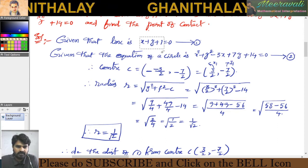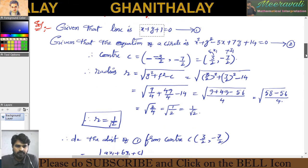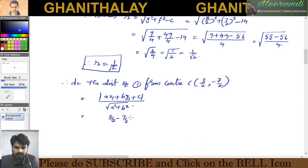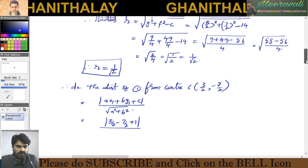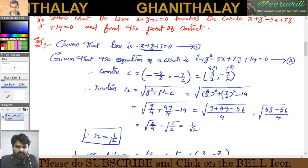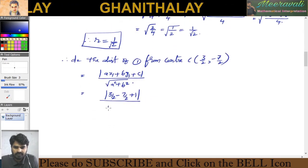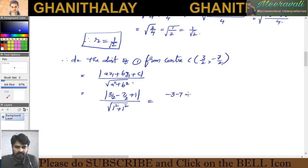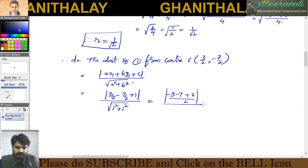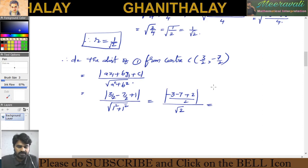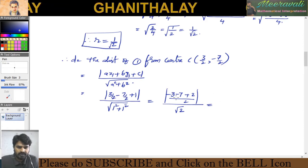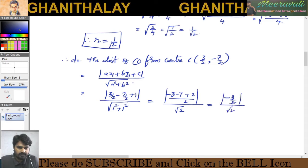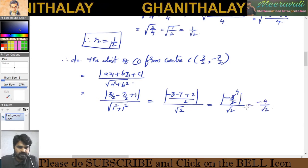Substituting x equal to 3/2 and y equal to minus 7/2 into the line equation: (3/2 minus 7/2 plus 1) divided by square root of (1 squared plus 1 squared). Simplifying the numerator: 3 minus 7 plus 2, all over 2, giving minus 2 by 2, divided by root 2. Note: plus 3 and minus 7, so we get minus 4 plus 2, which is minus 2 by 2, divided by root 2.